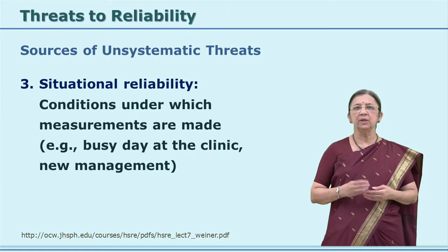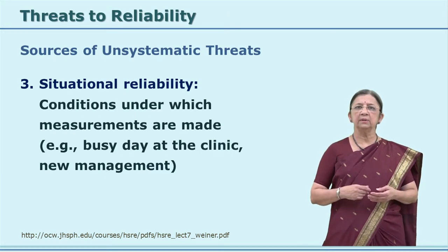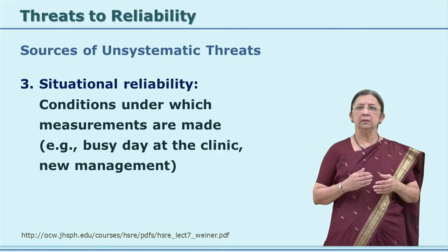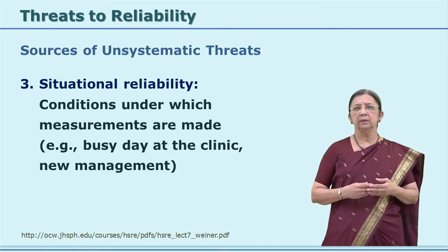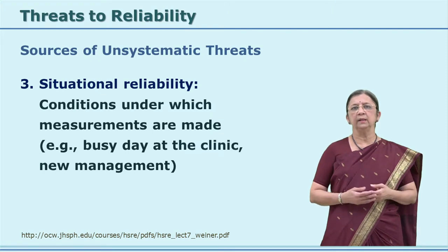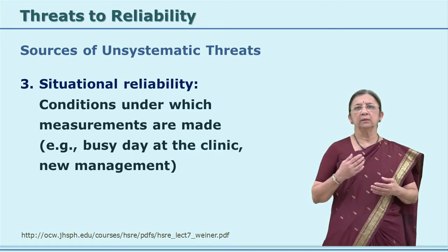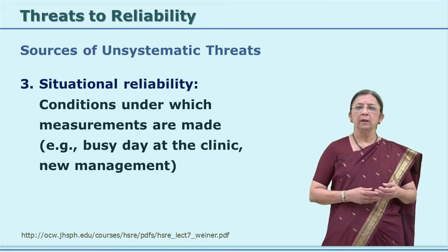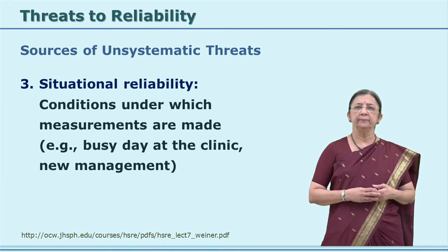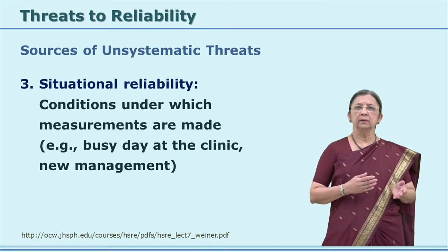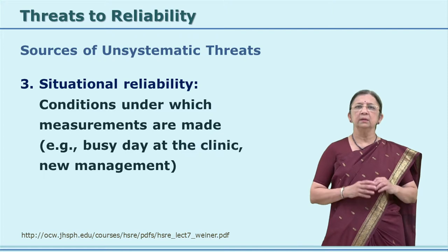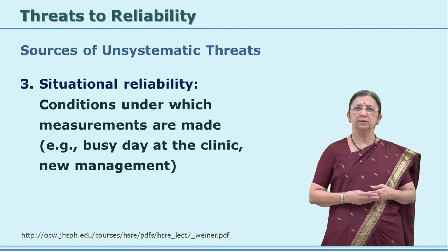Third is situational reliability. These are the conditions under which the tool is given and observations are made. The conditions may refer to the seating arrangement, under whose guidance the tool is administered, or the place where you are conducting this. These are called situational variables, and they do affect the reliability of the instrument.